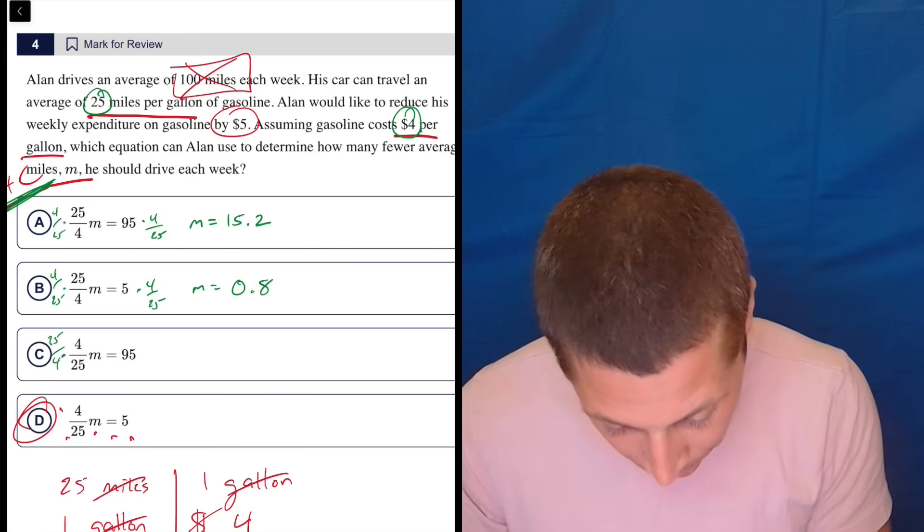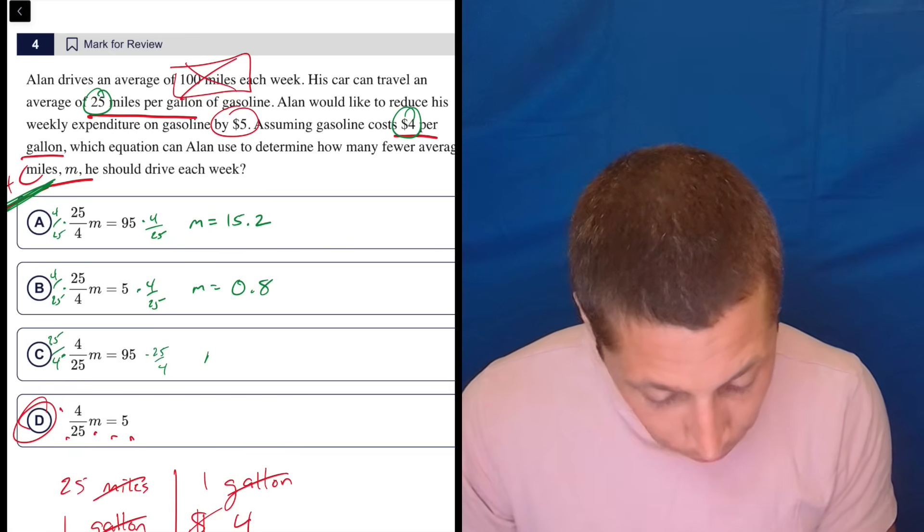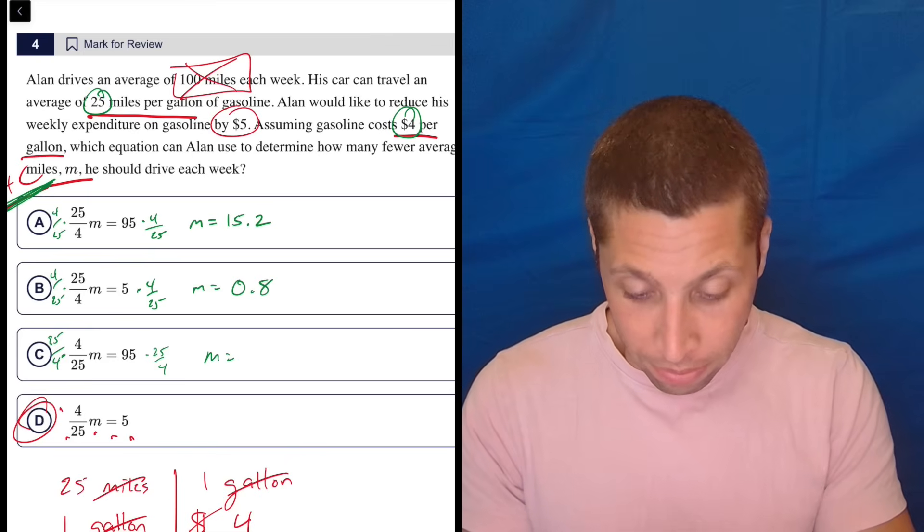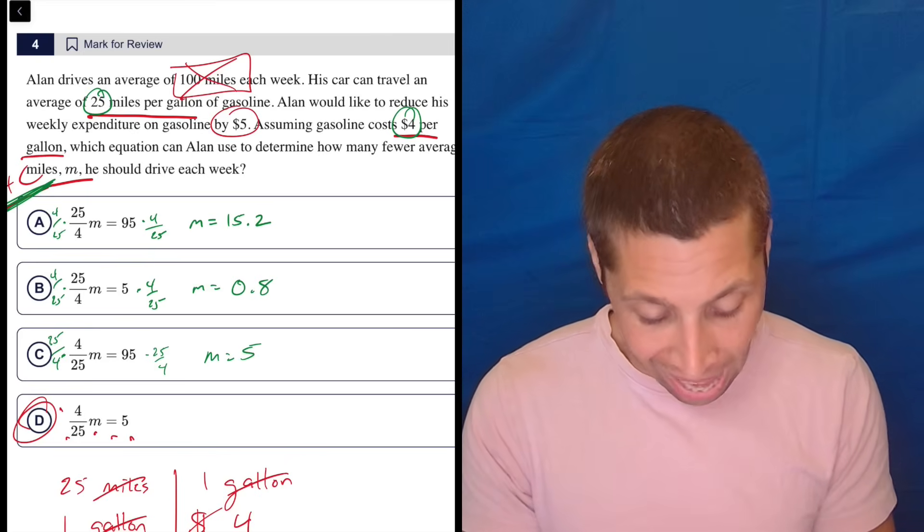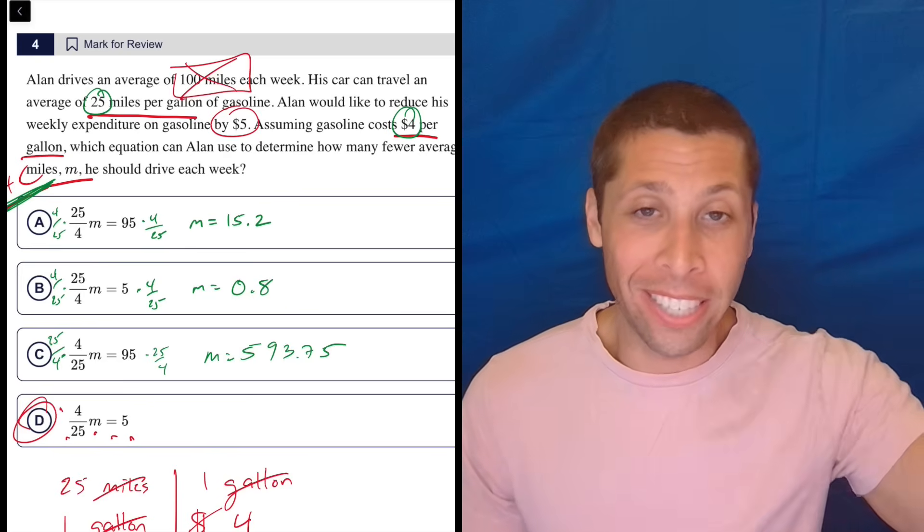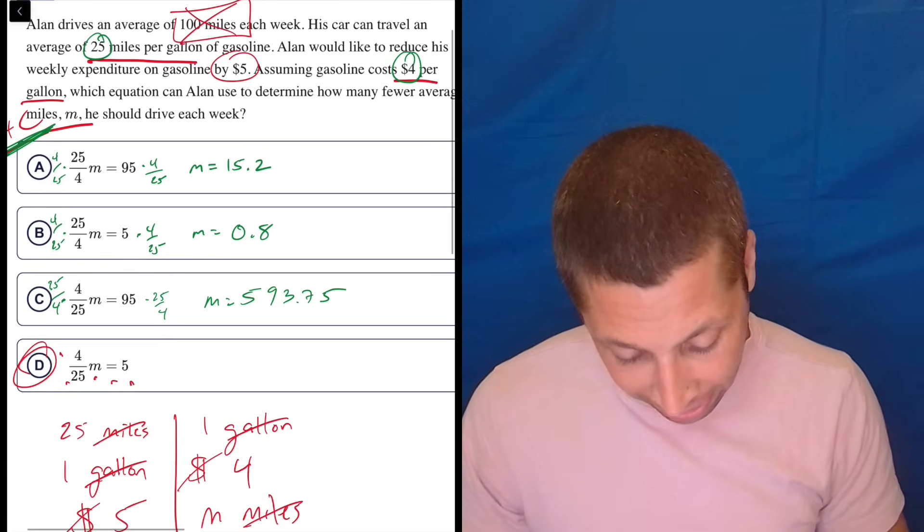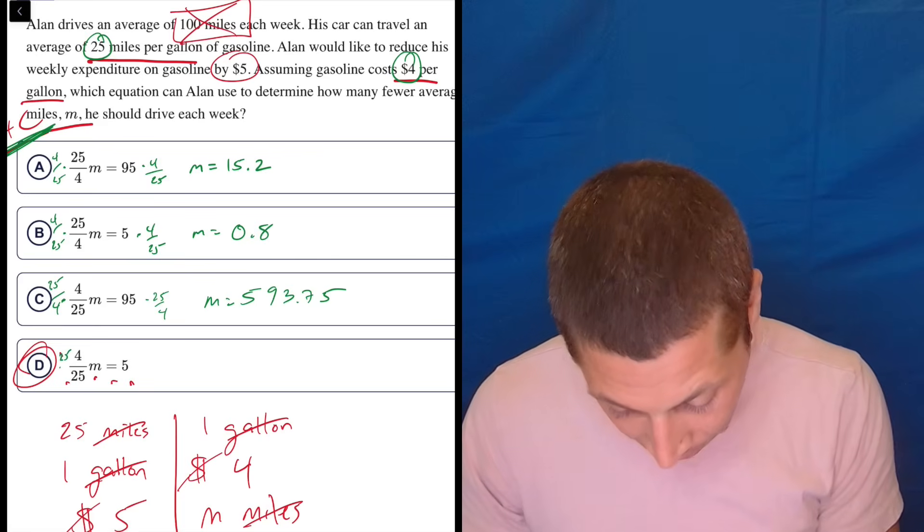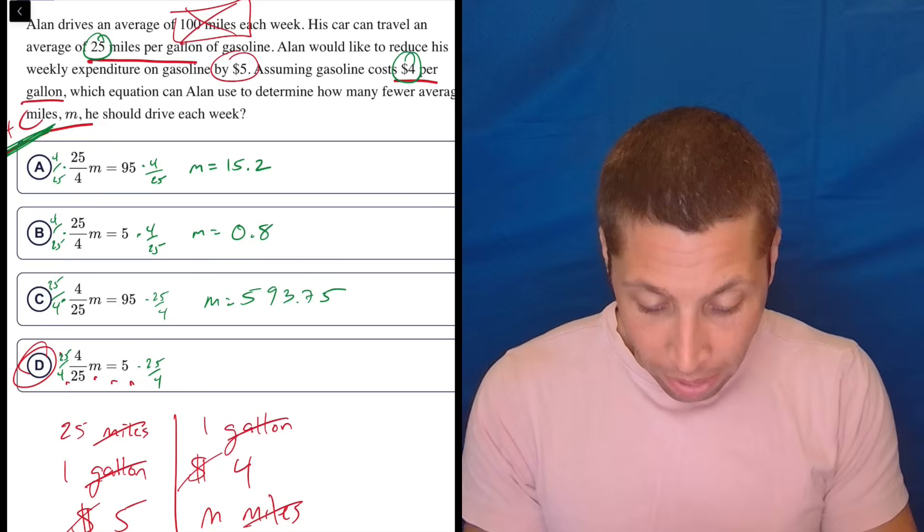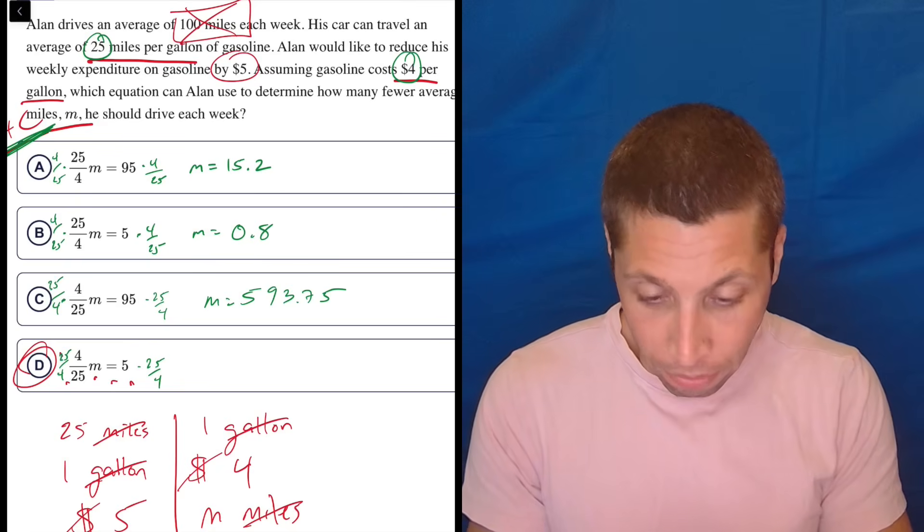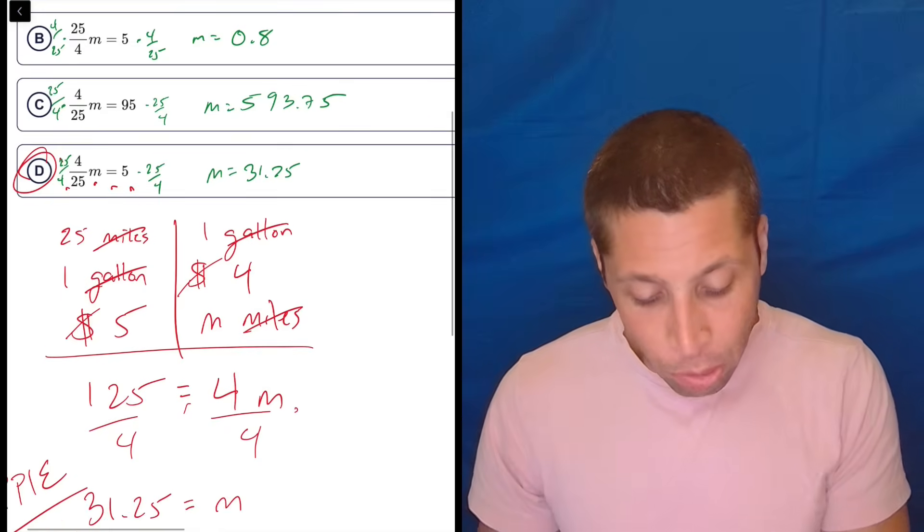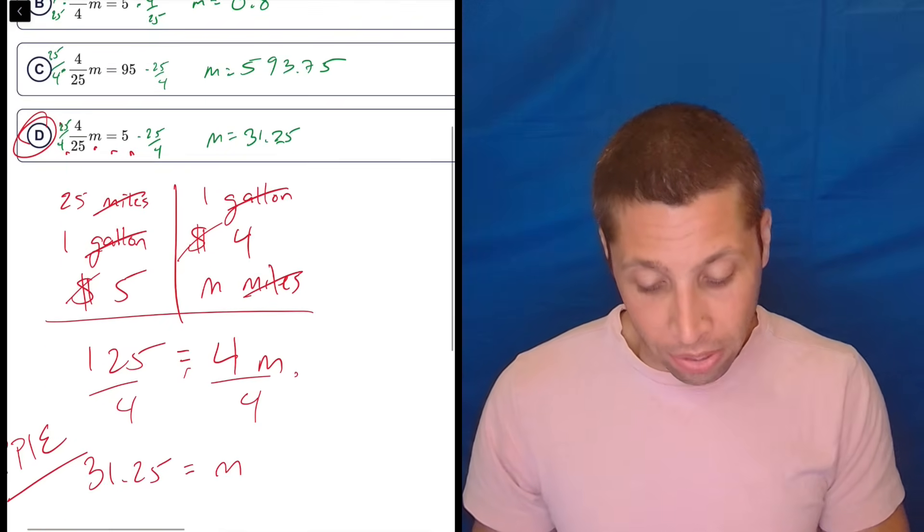So 4 over 25, 4 over 25. So this is going to be M is 20 divided by 25. So I should have done that. That's 0.8. So he's got to drive less than a mile to get to what? $5 saved? That doesn't make any sense. It doesn't work. So multiply here by the reciprocal, 25 over 4, 25 over 4. This is going to be insane. 95 times 25 divided by 4. I'm getting 593.75. So that's way more miles than he even drives. So no, it doesn't make any sense.